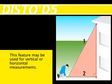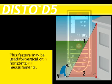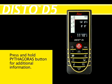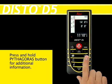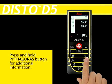Note: this feature may be used for vertical or horizontal measurements — for example, measuring the length of a wall section from a distance. Additional information can be calculated by pressing and holding the Pythagoras button until it beeps.